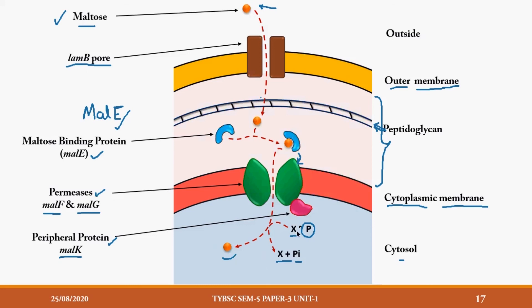Since this is active transport, energy is required. A high-energy phosphate bond compound is broken down and released as inorganic phosphate, and the energy from that process is used for the transport of the solute — maltose — inside the cell.